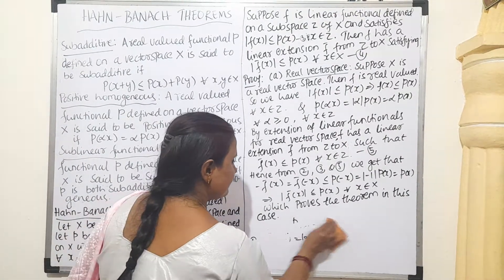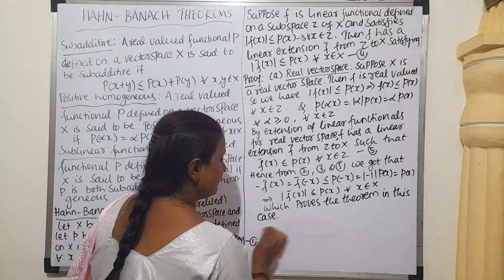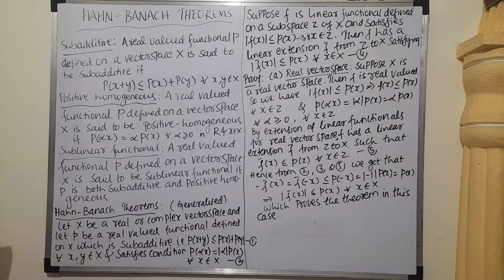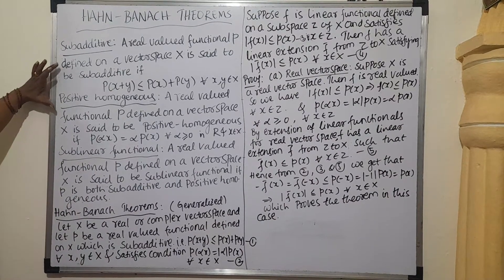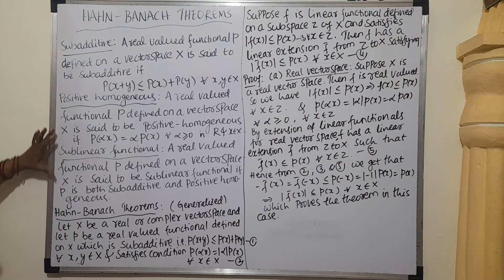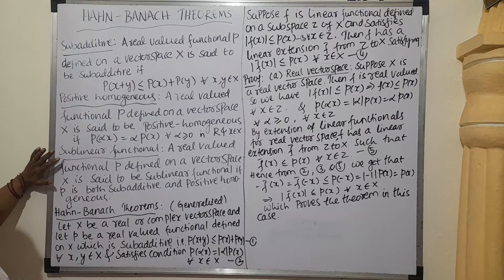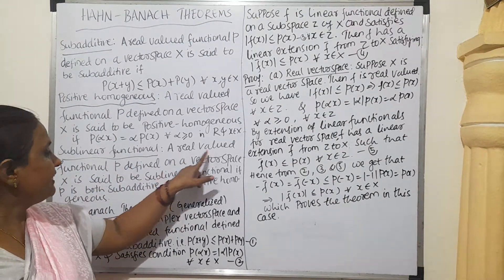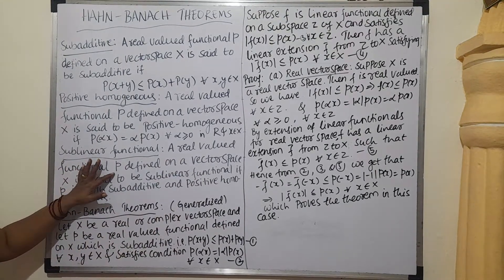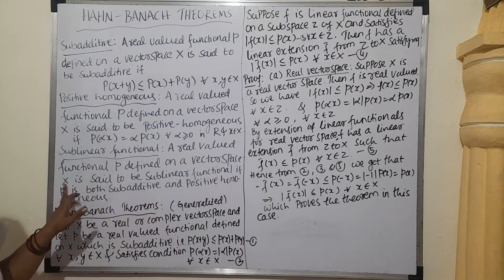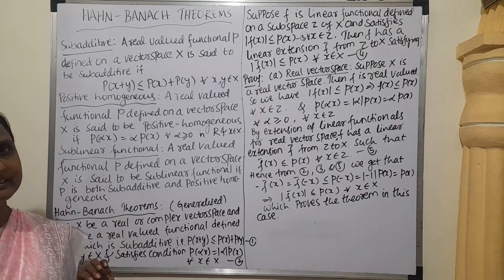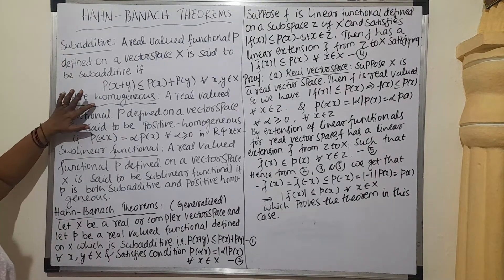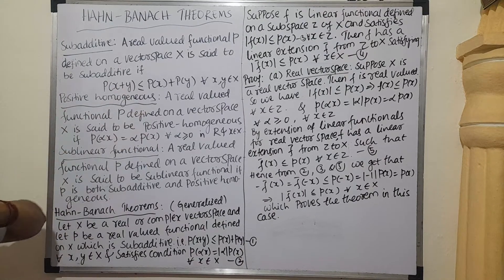If this property is satisfied, it is said to be a positive homogeneous functional. Including these two properties, we can say that the functional P is a sub-linear functional. That is, a real-valued functional P defined on a vector space X is said to be sub-linear if it is sub-additive and positive homogeneous.